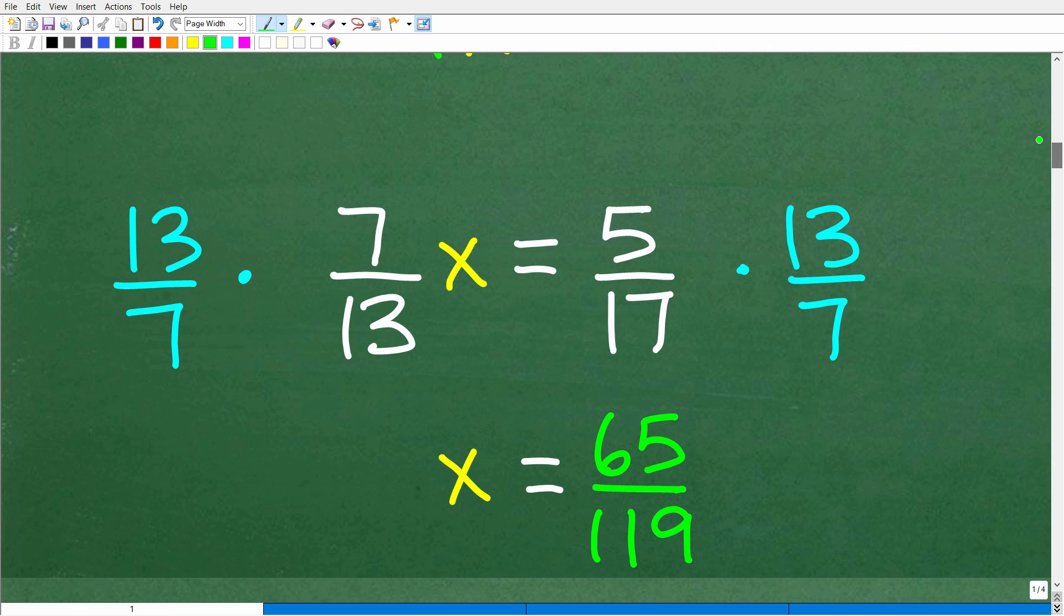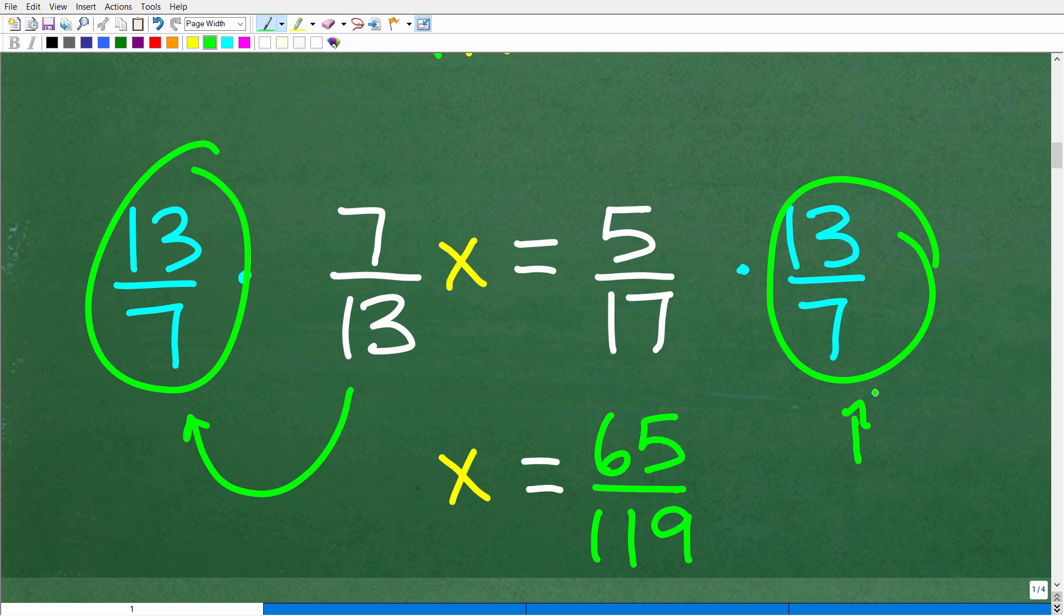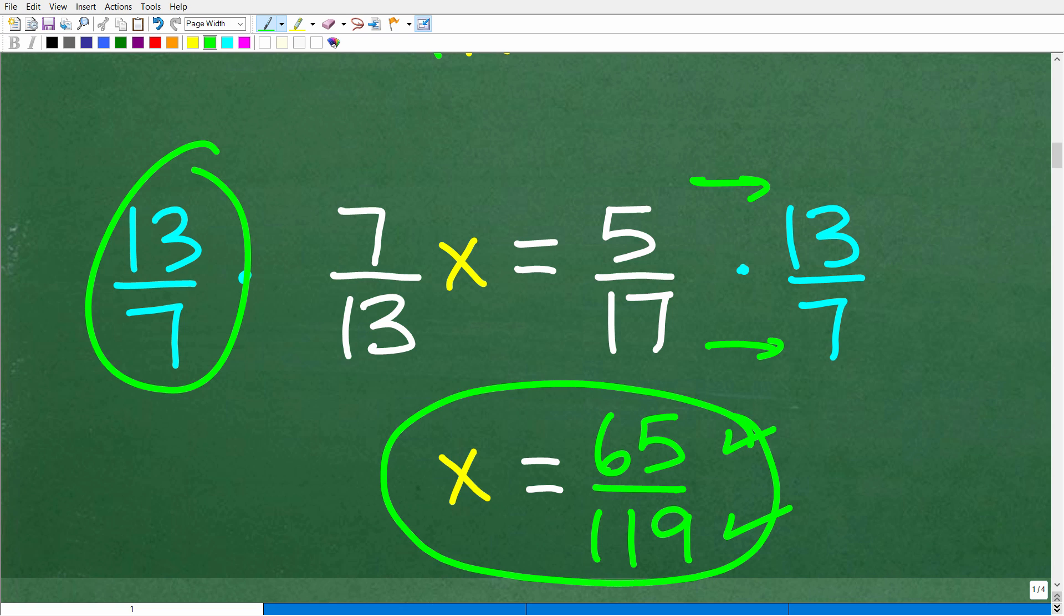So here is the answer. We have 7 over 13x is equal to 5 over 17. We're going to take the reciprocal of this fraction right there, 13 over 7, and multiply both sides of it. Now, remember, I did say you can use your calculator, because we're going to have to do some calculations here. So 5 times 13 is 65, and then 17 times 7 is 119. So this is the correct answer.